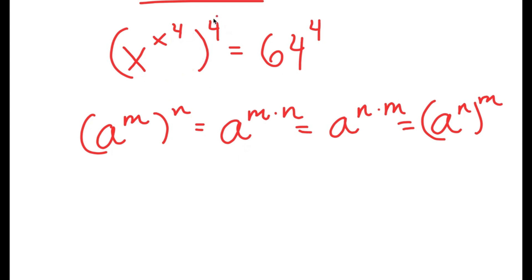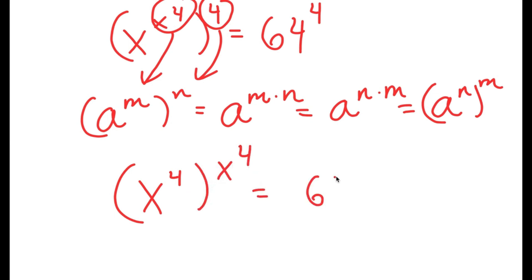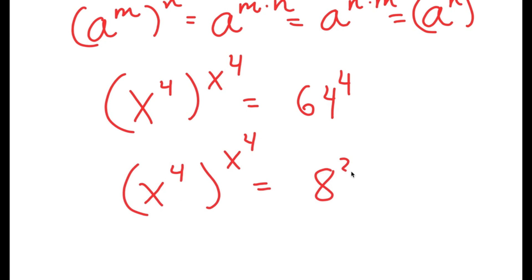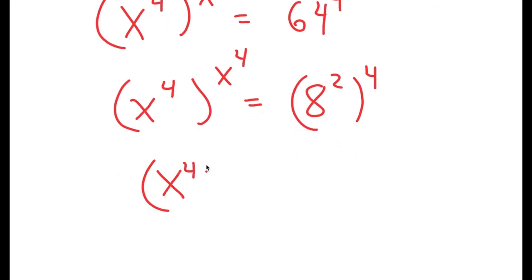So, x to the power of x to the power of 4 to the power of 4 equals 64 to the power of 4. I can think of x to the power of 4 as m and 4 as n. So this turns into x to the power of 4, to the power of x to the power of 4, equals 64 to the power of 4. Now, 64 to the power of 4 I can rewrite as 8 squared to the power of 4, which turns into 8 to the power of 8.